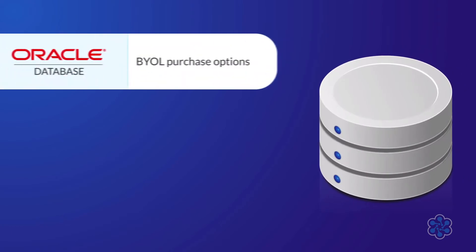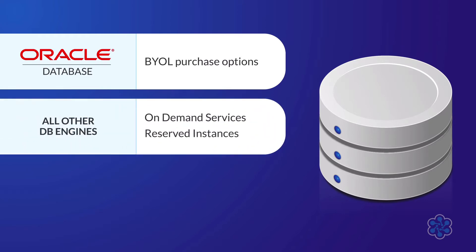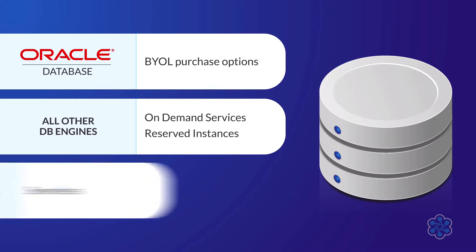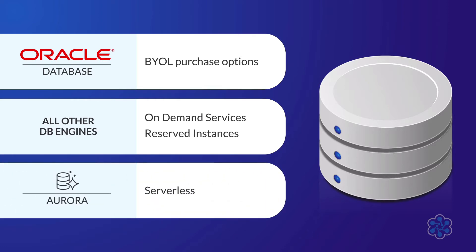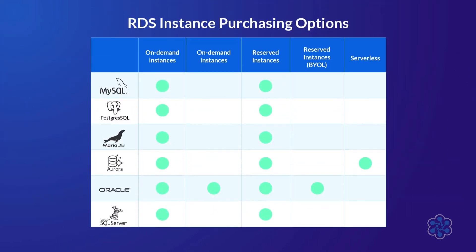Currently only the Oracle database engine uses the Bring Your Own License purchase options. All other database engines only use on-demand instances and reserved instances, with the added exception of Aurora also using serverless as an additional purchasing option. You can see in this table which database engines support each type of purchasing option. It's good to be aware of these different options, as having an understanding of these can help you save a considerable amount of money depending on your use case.